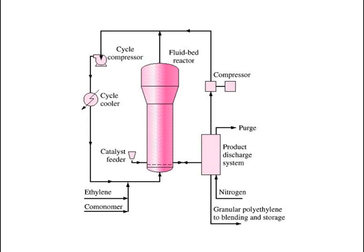There is a schematic diagram for this process. At the center is a fluid bed reactor; fluid from the reactor goes to a cycle compressor, then to a cycle cooler, and back to the fluid bed reactor. Ethylene and some comonomer are added, as well as catalyst. From the fluid bed reactor, product goes to a product discharge system, which also feeds back to the reactor. The product goes to granular polyethylene for blending and storage. In the product discharge system, nitrogen is added, and the product goes to a compressor and then back to the cycle compressor.